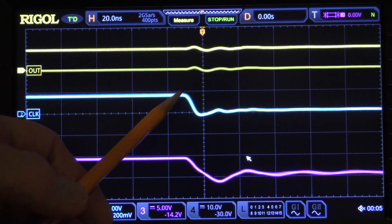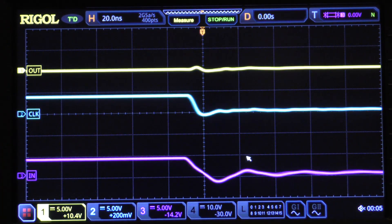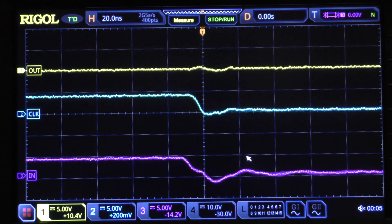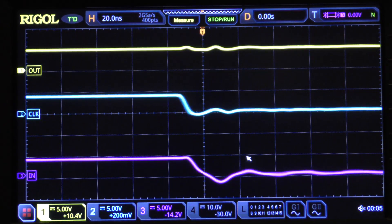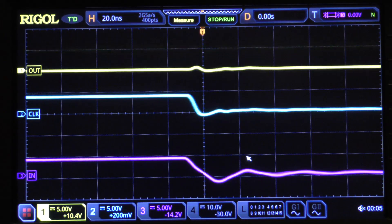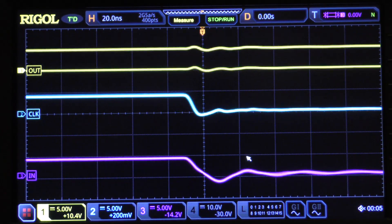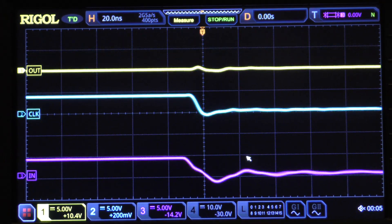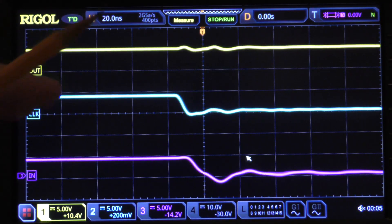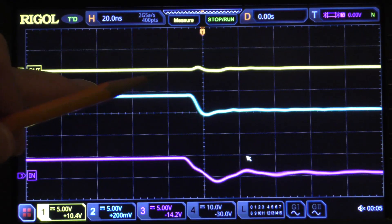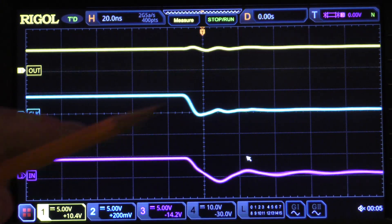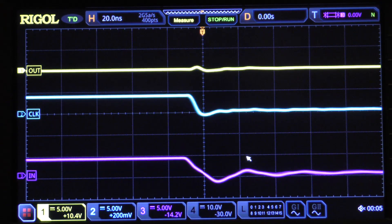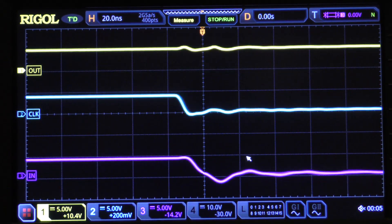All we mean by clock jitter is the time between, say, the first clock transition and the next clock transition is not the same for each cycle. Let's suppose that the transition is 100 nanoseconds, but sometimes it's 98 nanoseconds and sometimes it's 101 nanoseconds or anything in between. That means we have three nanoseconds of clock jitter.